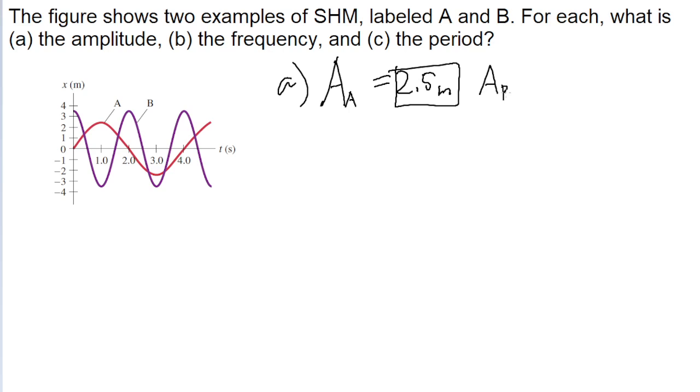For the amplitude of B, we'll use the exact same process. Looking at function B, we can see that both above and below the t-axis, it reaches about 3.5 meters. So that is the amplitude for B.